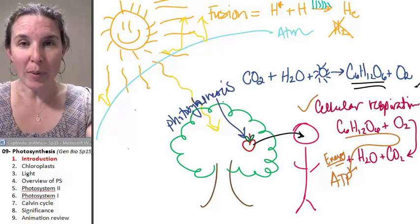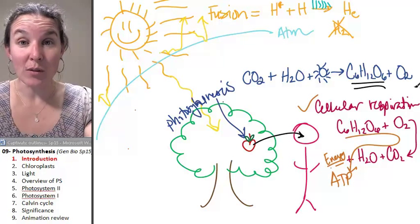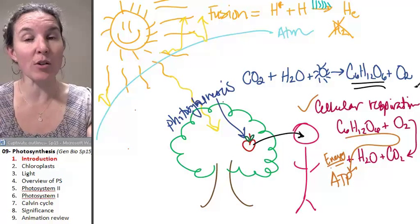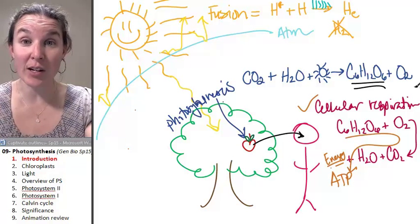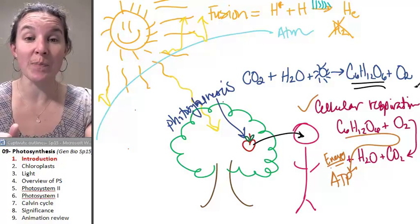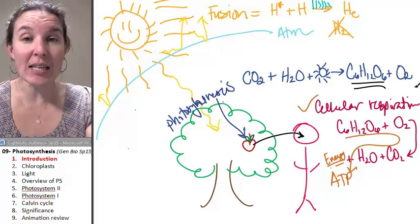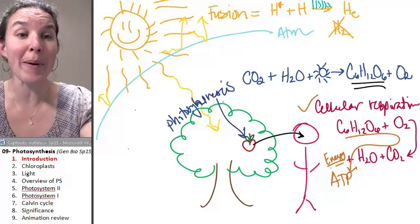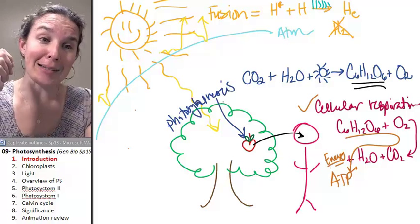Let's start out by looking at the organelle responsible for photosynthesis. Remember, cellular respiration, we had the mitochondria. That's who is responsible for carrying out cellular respiration. In photosynthesis, it's the chloroplast. So let's go do a little bit of chloroplast anatomy.